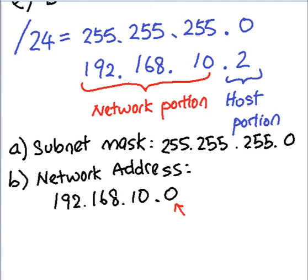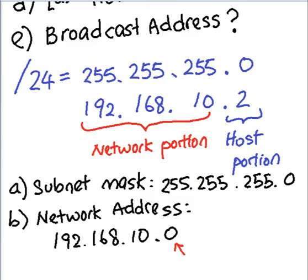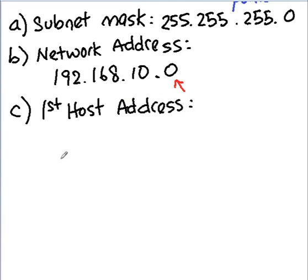So let's continue to see the third part where we have to find the first host address. For the first host address in this case, we are going to have 192.168.10.1. So this is the first host address.